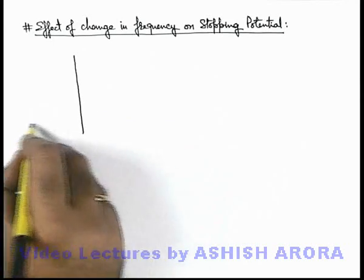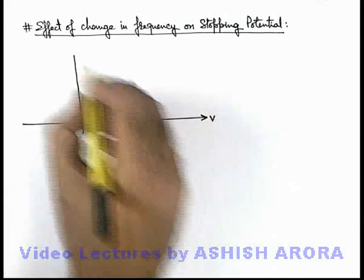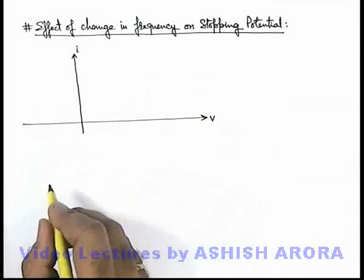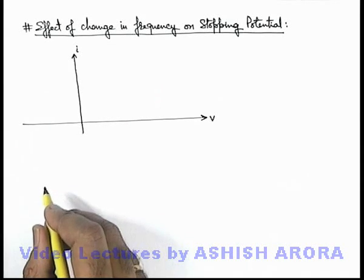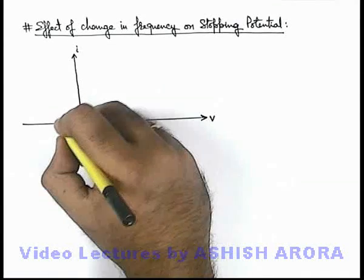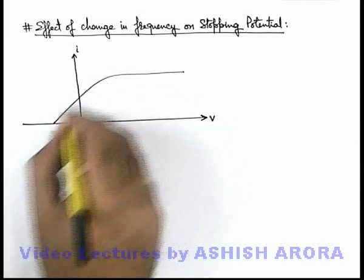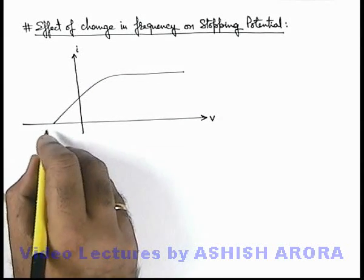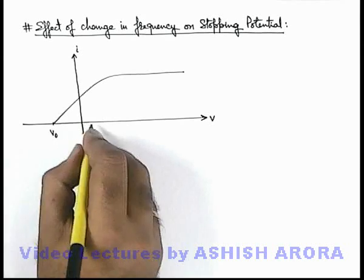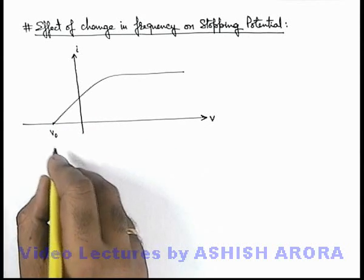We have recently discussed in the previous section that in the variation of current in the discharge tube of photoelectric effect with the voltage, the curve is plotted like this, in which on the reverse potential V not, the current becomes zero which we term as stopping potential.